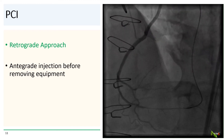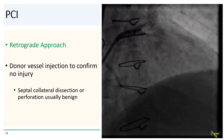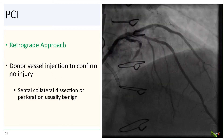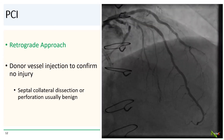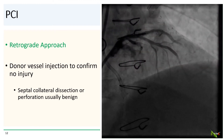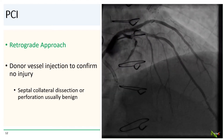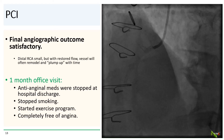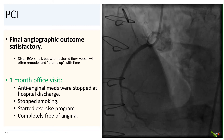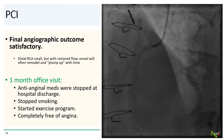We obtained a reasonable result after laying down two stents from the proximal to mid-RCA. We always inject the donor vessel to confirm no injury. In this case, the left main and the LAD were both fine. There is a bit of injury to the septal collaterals, but dissections and even perforations in the septals are usually fairly benign. The final angiographic outcome was quite satisfactory. The distal RCA is small, but with restored flow, the vessel will often remodel and plump up with time.